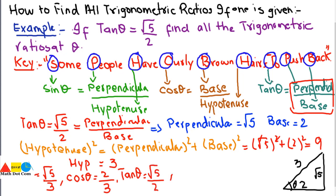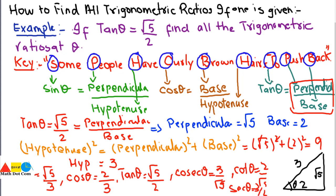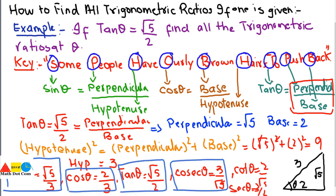Now, given sin, cos, and tan, we can easily find cosecant, cotangent, and secant using reciprocal identities. Cosecant is the reciprocal of sin theta, so its value is 3 over root 5. Cotangent is the reciprocal of tan theta, so its value is 2 over root 5. Secant is the reciprocal of cos theta — since cos theta is 2 over 3, secant theta is 3 over 2. We have now found all 6 trigonometric ratios.